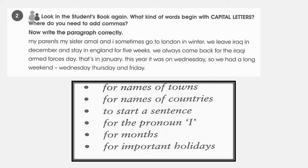Now we move to Exercise Two. Look in the student's book again. This question is about punctuation — which words begin with capital letters? And where do you need to add commas? Now, dear students, after looking at the 'Different Schools' passage, you will see where we used commas. Then we are asked to correct the text by adding commas and changing small letters to capital letters.